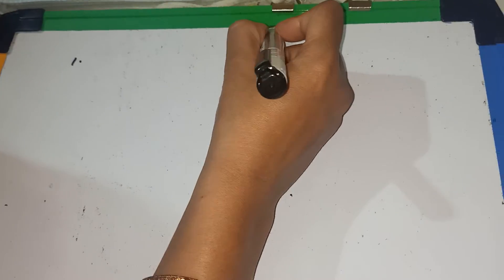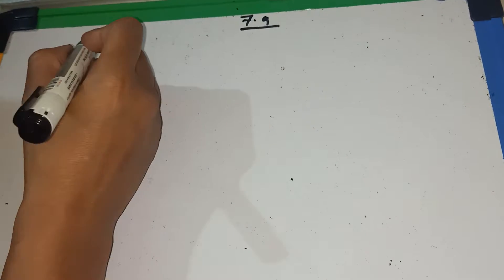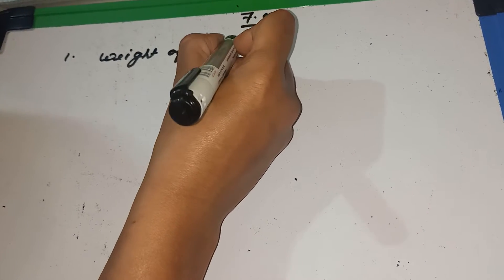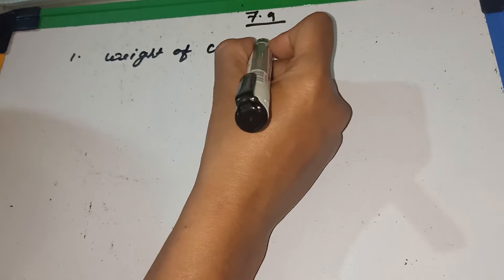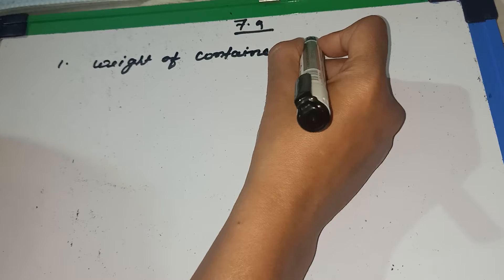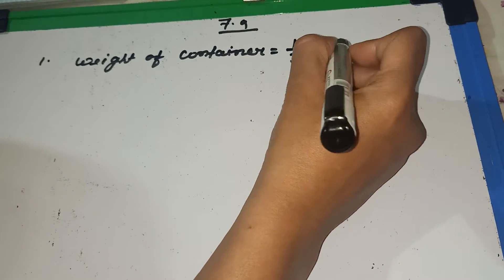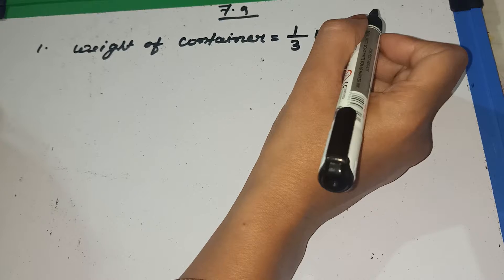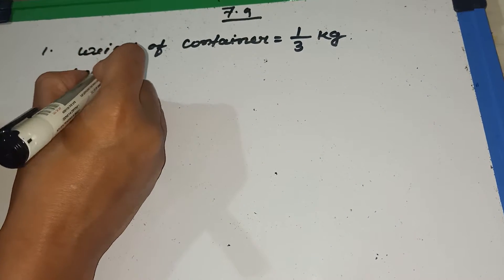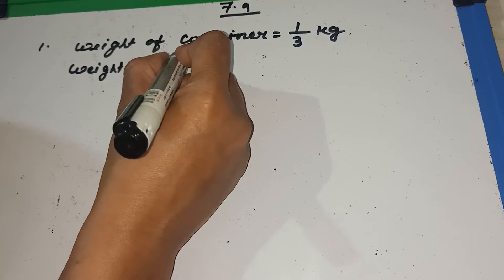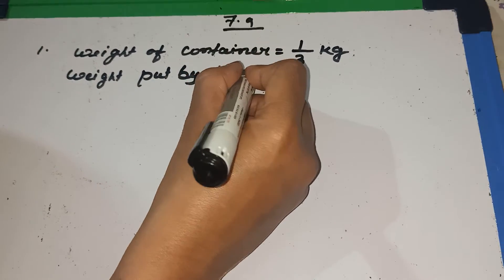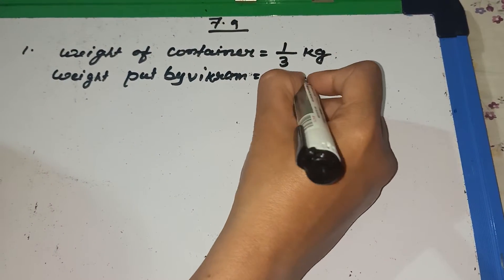How can we write number 1, 7.9? What problem? So we will write like this, weight of container. Weight of rice is equal to 1 by 3 kg. Now, Bikram put 7 by 6 kg of rice into the container. Weight put by Bikram is equal to 7 by 6 kg.